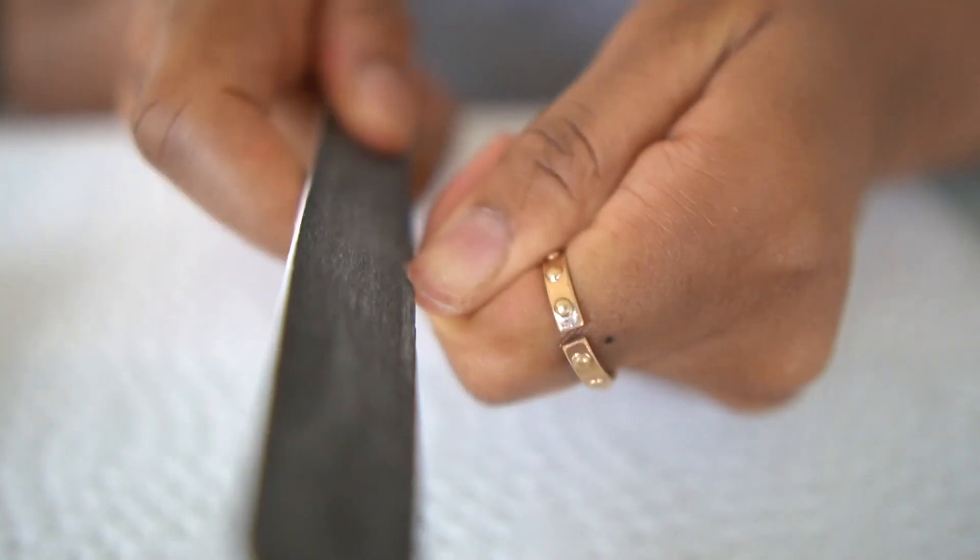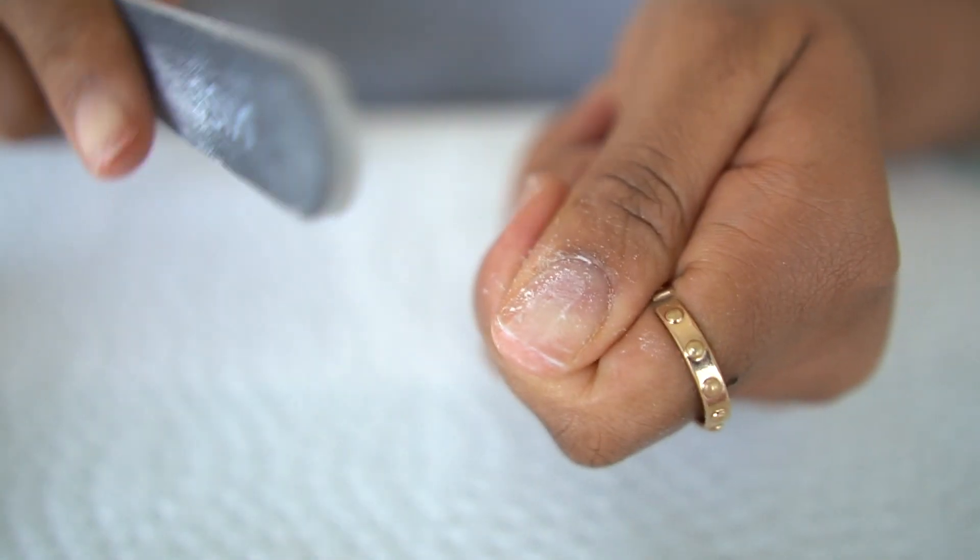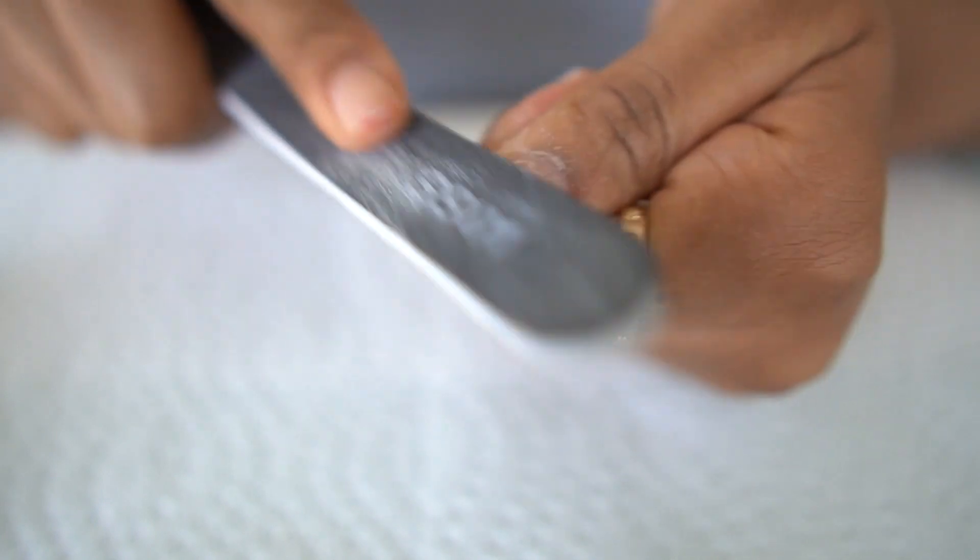And I don't like it when my natural nails are kind of showing underneath whenever I have nail extensions on, so I like to file them down. My nails are already short to be very honest, but I'm just kind of showing you guys what I'd normally do. And after that, I just create some friction on the surface of my nails, so I kind of just file over my nails.